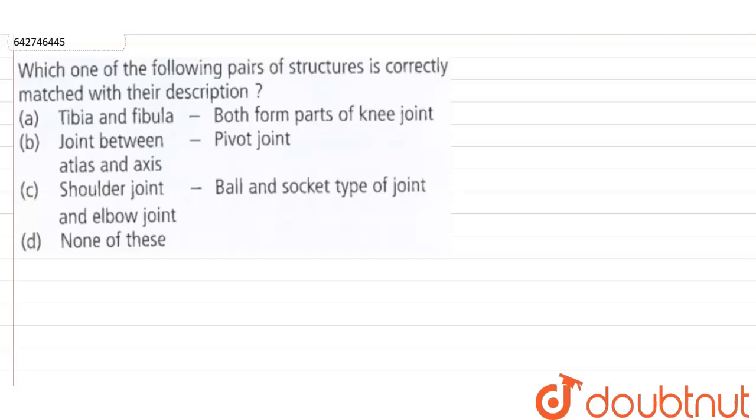In this question we have to look at the given options and select the one where the pair of structures have been correctly matched with their description. So first of all they are saying tibia and fibula. Now both of these terms are associated with our skeletal system.